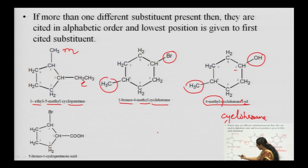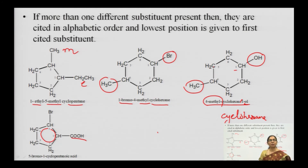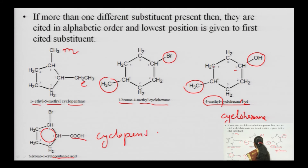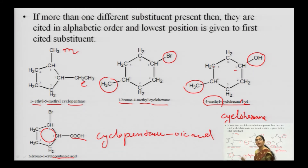Here on a cyclohexane ring there is a COOH substitution and a Br substitution. Since COOH has very high priority, the family becomes carboxylic acids — the name is cyclopentanoic acid. With COOH at position 1 and bromine at position 5, the full name comes out to be 5-bromocyclopentanoic acid.